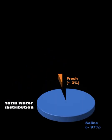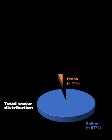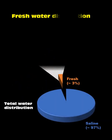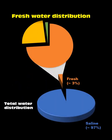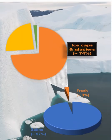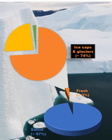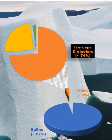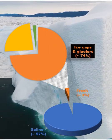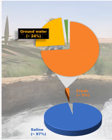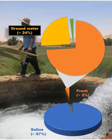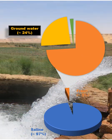Let us look at the freshwater distribution on the Earth. Ice caps and glaciers hold around 74% of freshwater. About 24% of freshwater is groundwater.